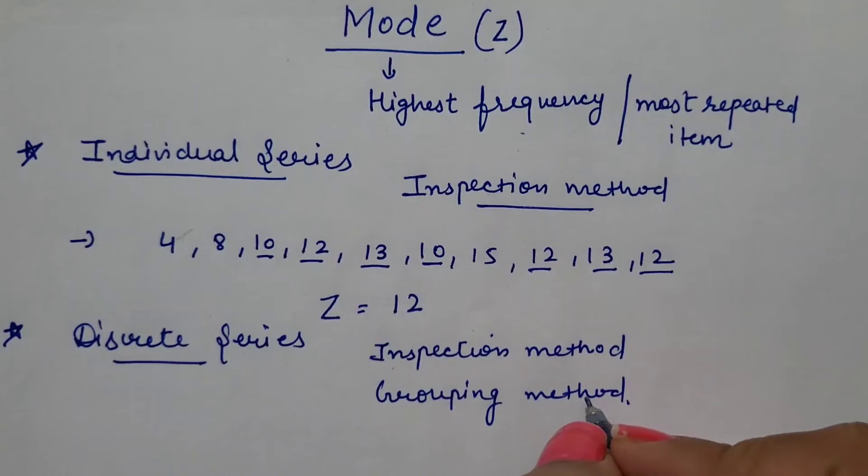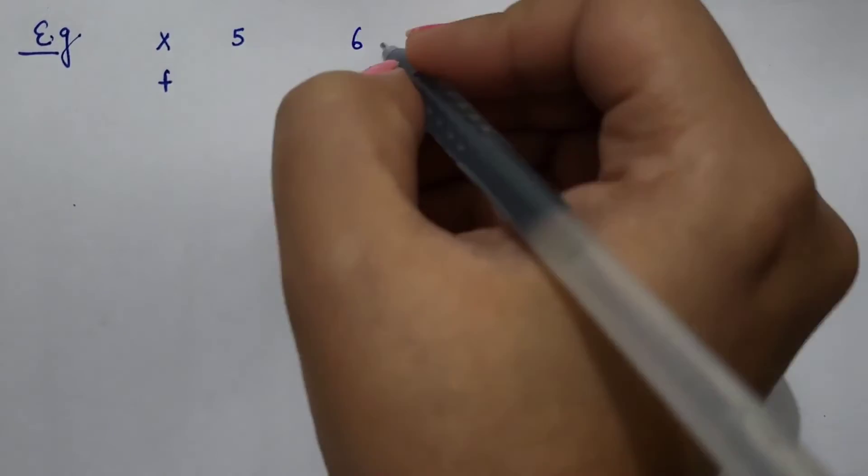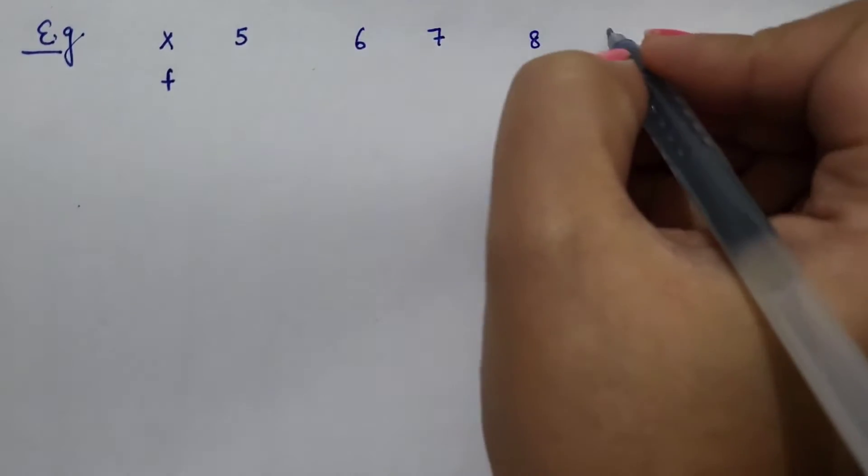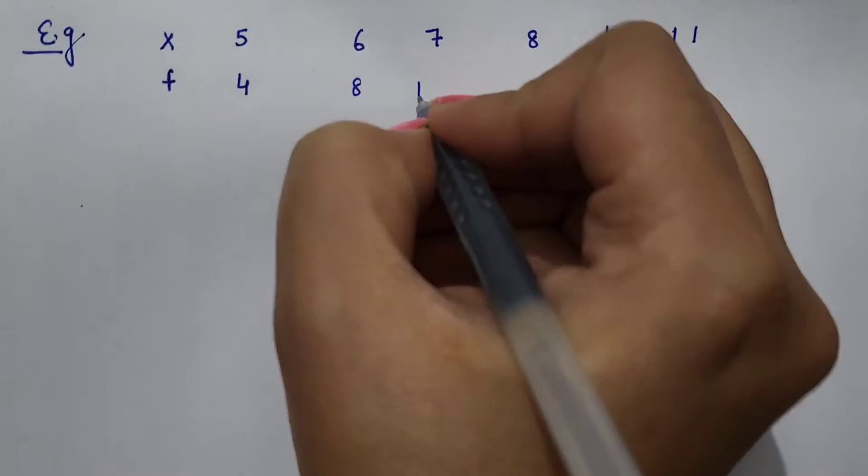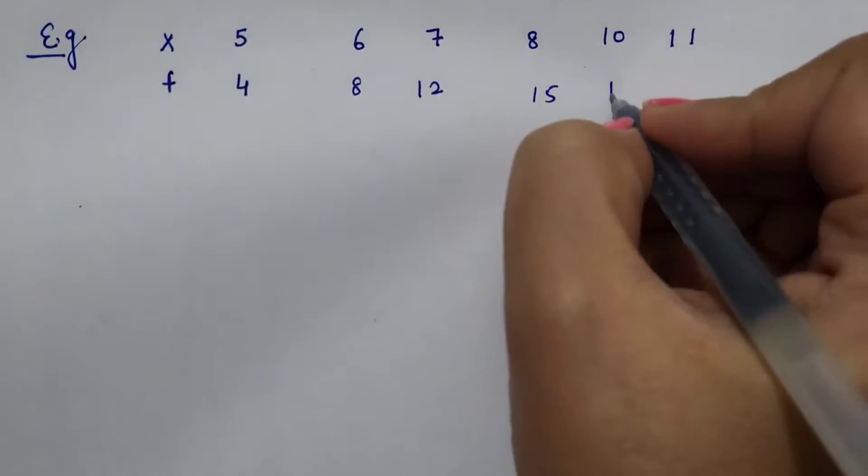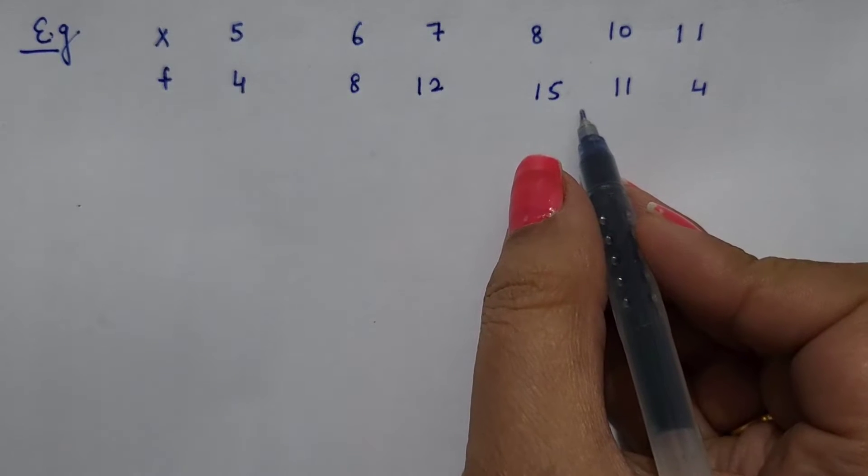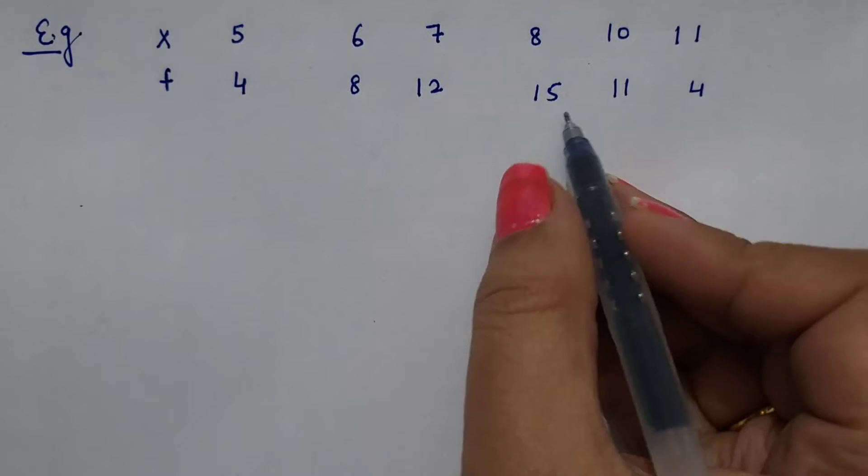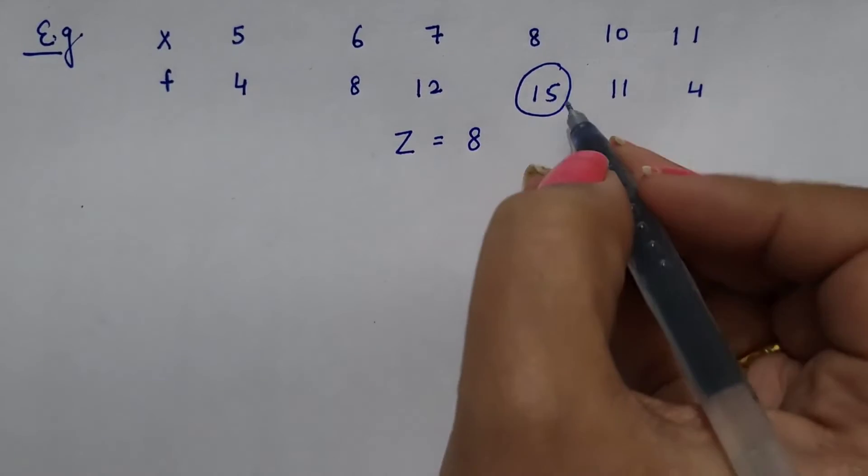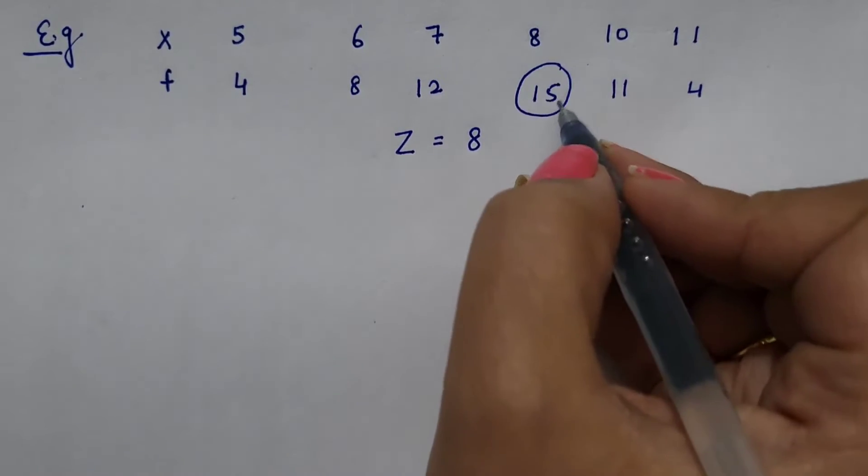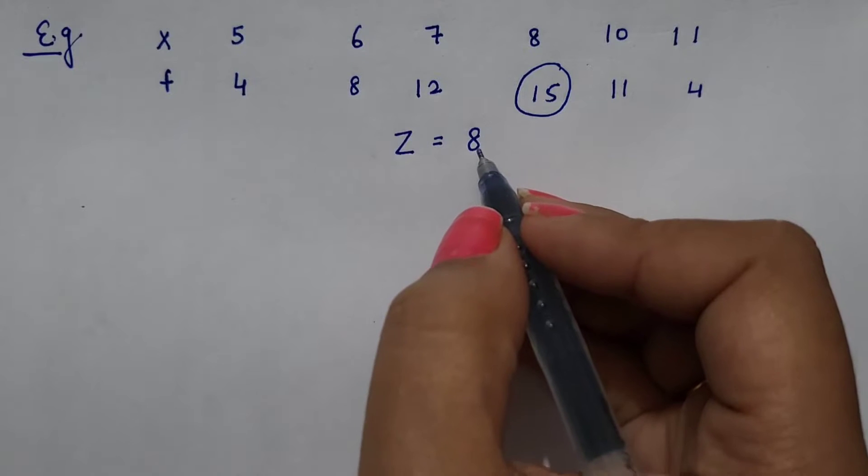First is inspection method and the second one is grouping method. With the help of example, calculation of mode in discrete series: X values are 5, 6, 7, 8, 10 and 11. Here frequency is 4, 8, 12, 15, 11 and 4. Just by inspection, it is clear that the highest frequency is 15. So, mode of this series is 8.